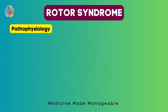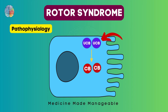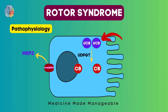Now let's try to understand the pathophysiology. Take this to be a representation of a hepatocyte. Normally, unconjugated bilirubin comes inside the hepatocyte, mostly after RBC breakdown. This unconjugated bilirubin is converted into conjugated bilirubin with the help of an enzyme called UDPGT. Most of the conjugated bilirubin is then sent into the bile ducts through a channel called MRP2, or multi-drug resistance protein 2. This is the channel which is defective in Dubin-Johnson syndrome.